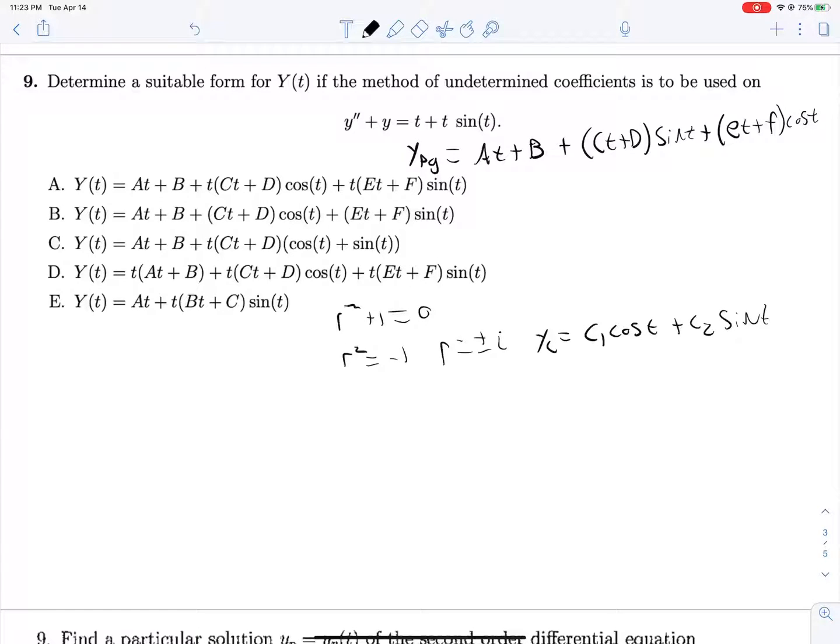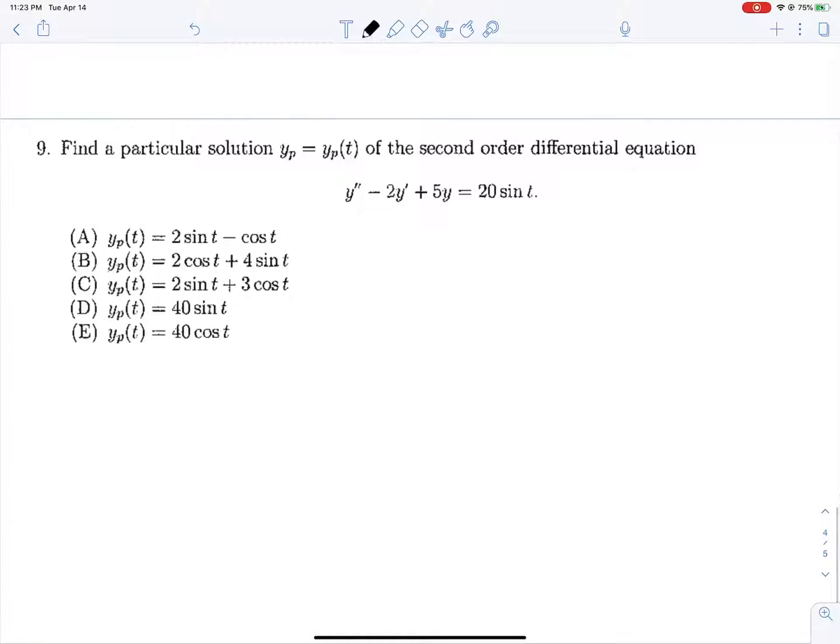We're going to need to multiply these guys all by t so that we don't have some constant times cosine and some constant times sine interfering with everything that matches down here. So that leaves us with answer option A. I really hope that the computer fan isn't unbearable. I'm not even sure why it's running. It shouldn't be.